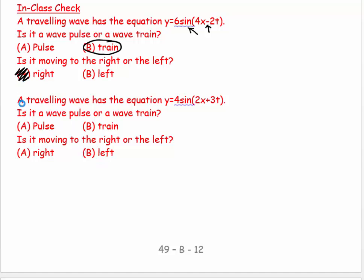And then, a traveling wave has an equation four sine two X plus three T. Again, it's a sine curve. And so it's going to be a wave train. And it's a positive sign there. So that means it's going to the left. Cool. Okay. There we have it.